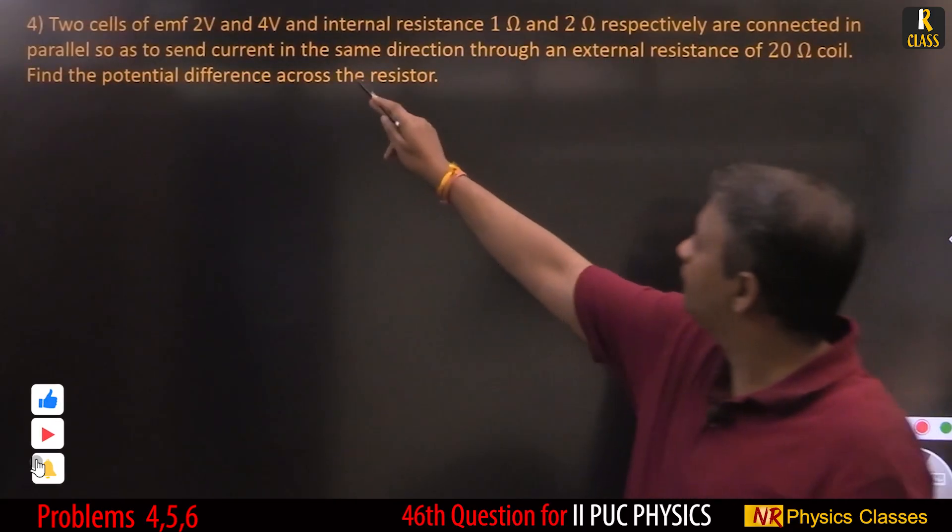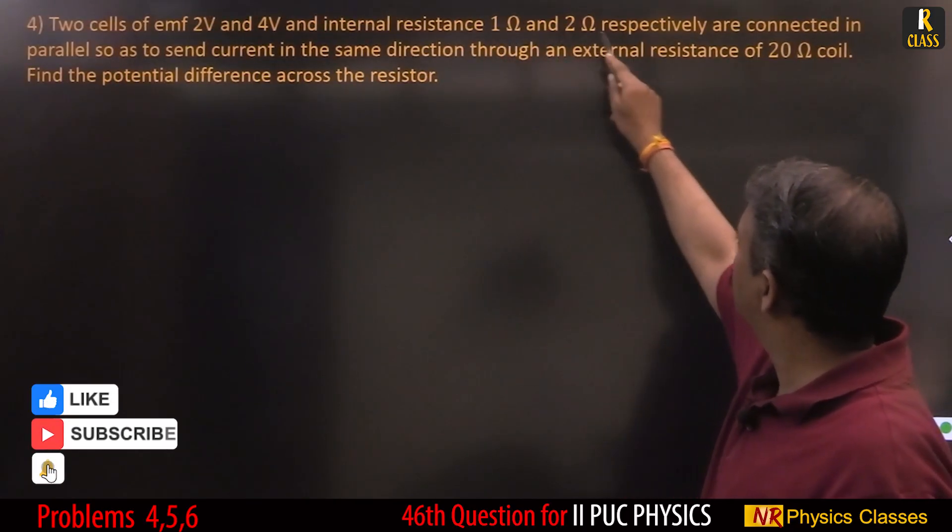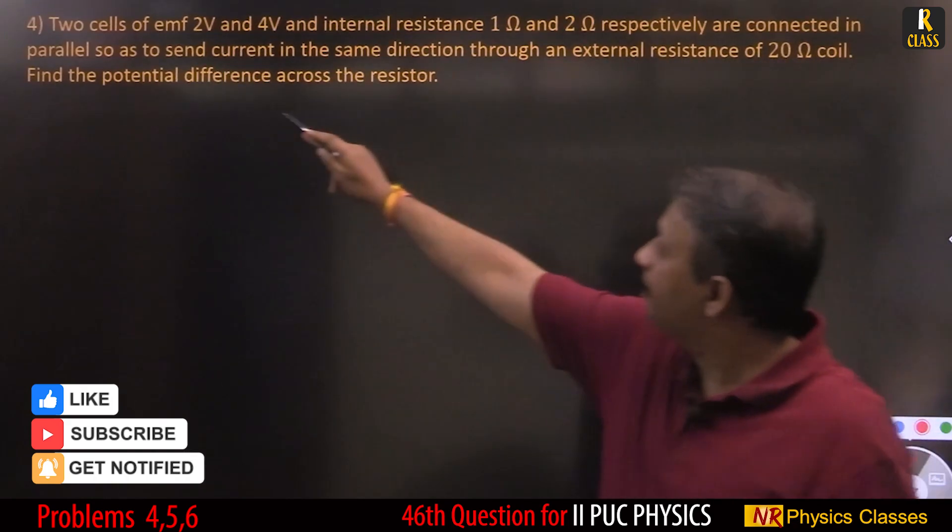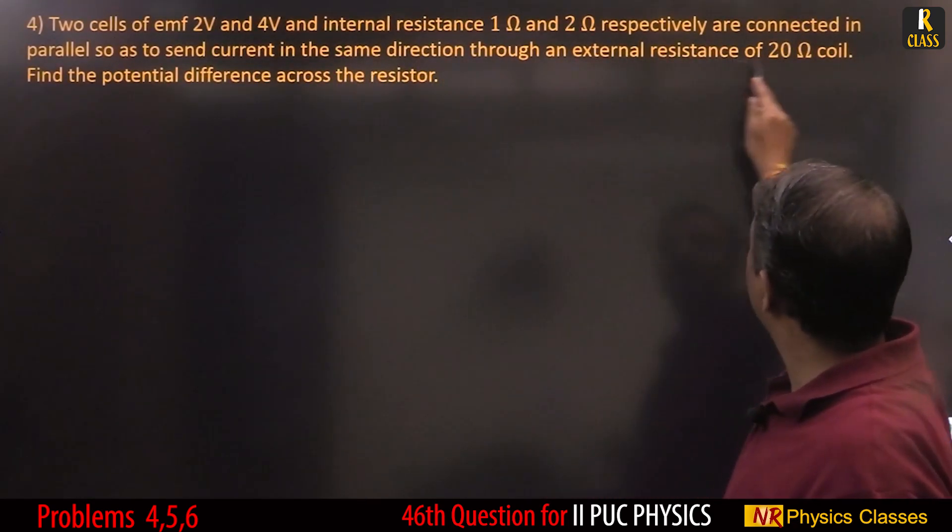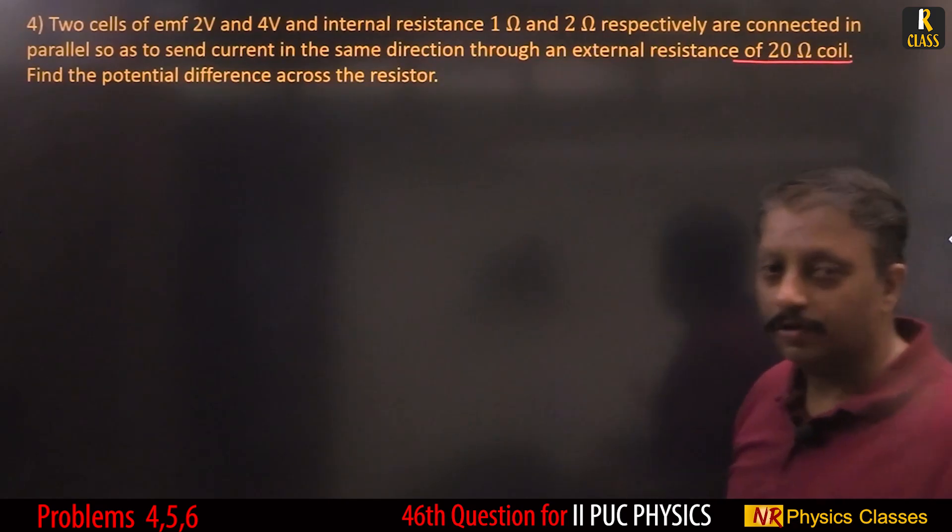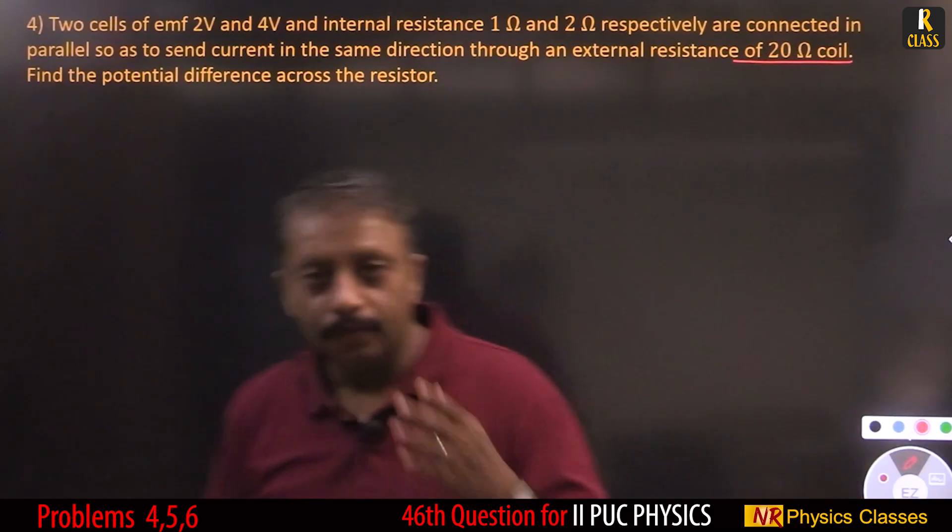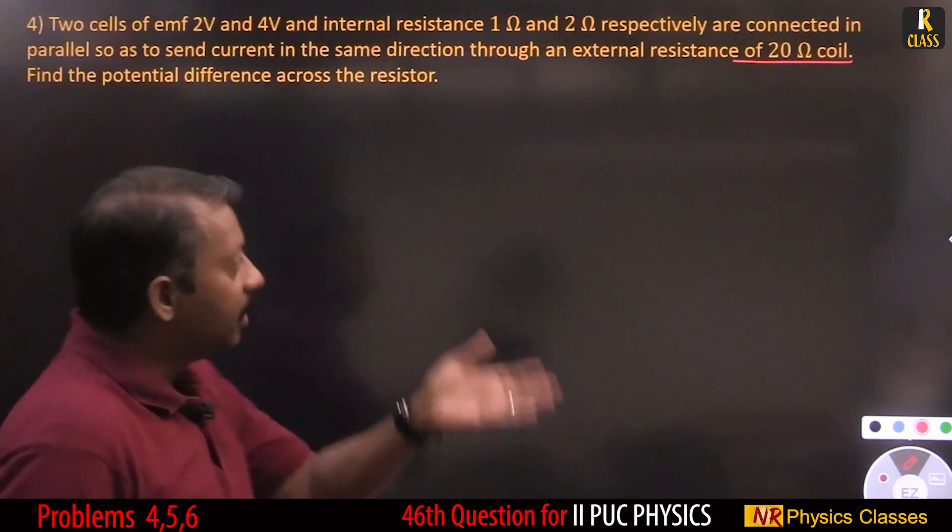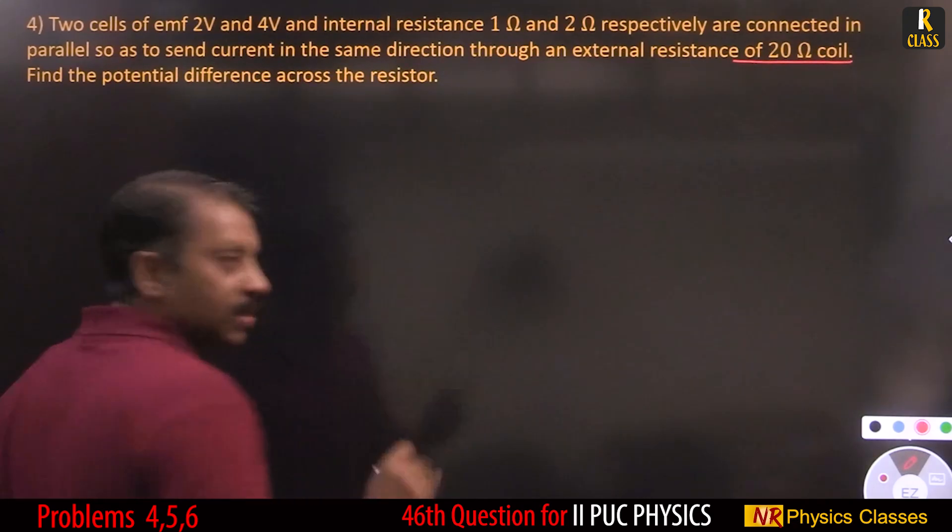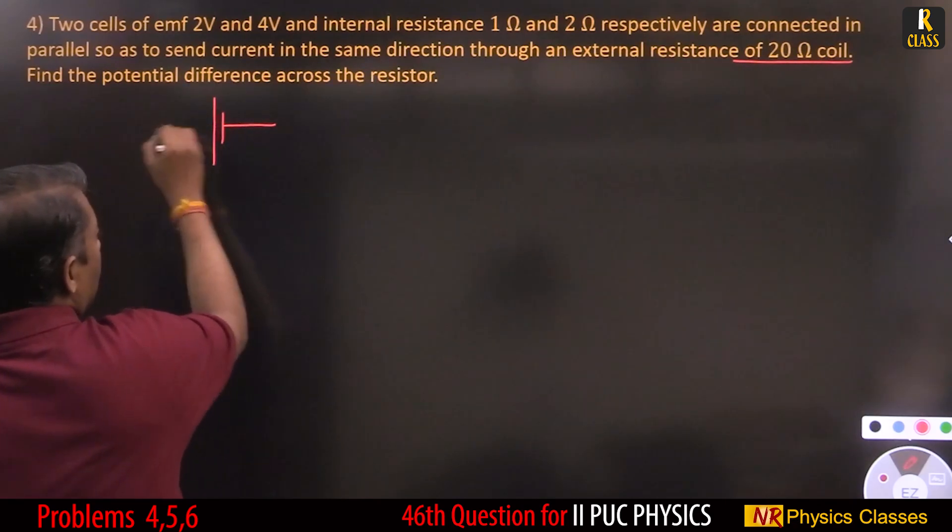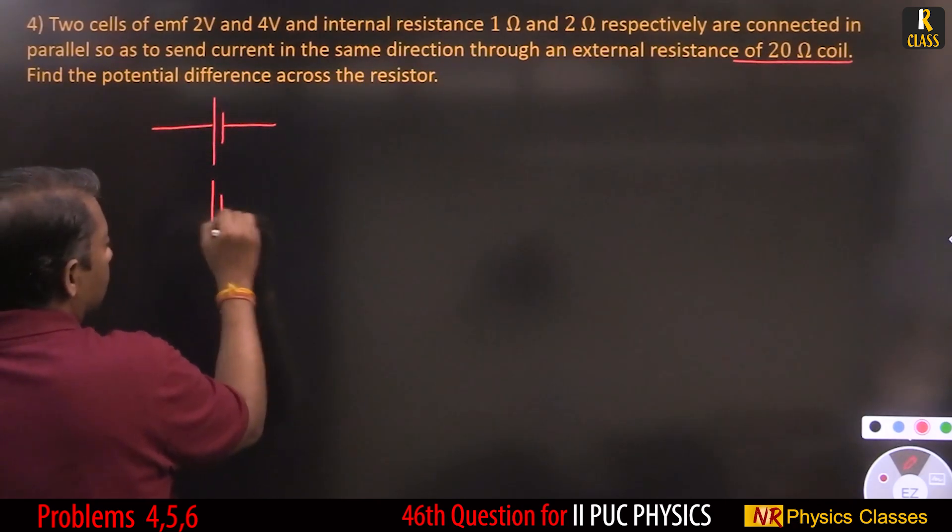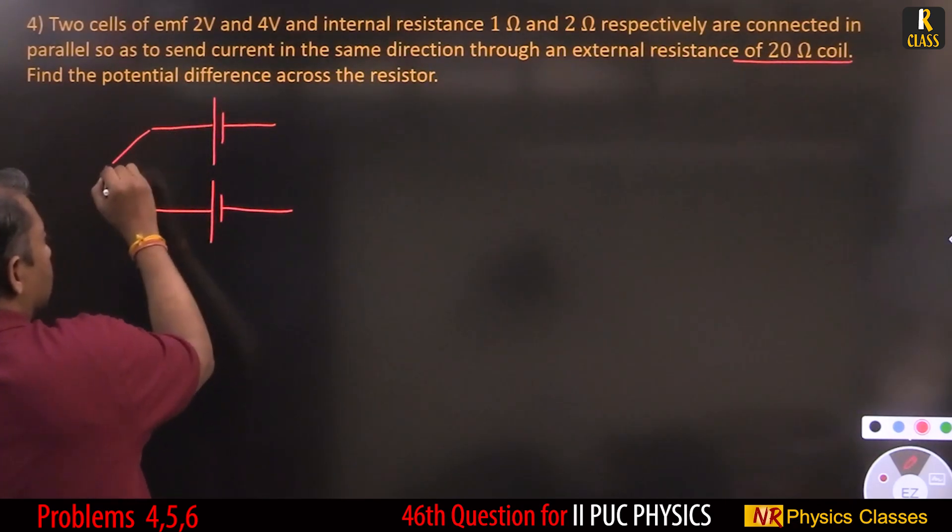Two cells 2 volt and 4 volt with internal resistance 1 ohm and 2 ohm respectively are connected in parallel so as to send current in the same direction through an external 20 ohm resistor. Find the potential difference. This is a simple circuit where two cells are in parallel such that they send current in the same direction.